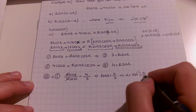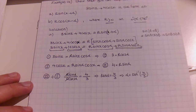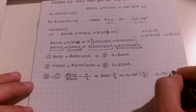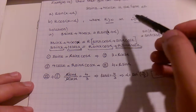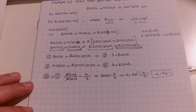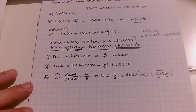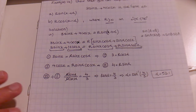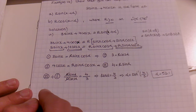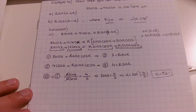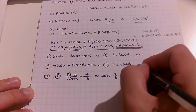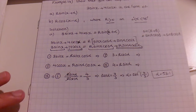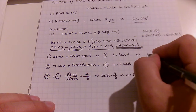So new equation 1: 3 equals R·cos(α), and equation 2: 4 equals R·sin(α). Dividing equation 2 by equation 1, we get 4 over 3. We can cancel R from numerator and denominator, giving sin(α) over cos(α), which is tan(α) equals 4 over 3.